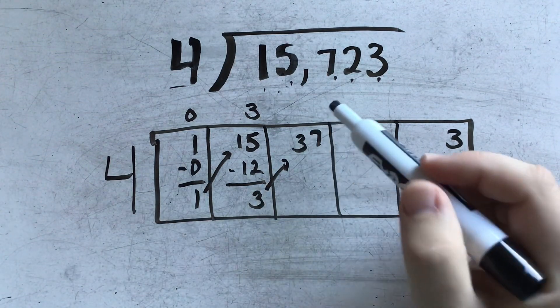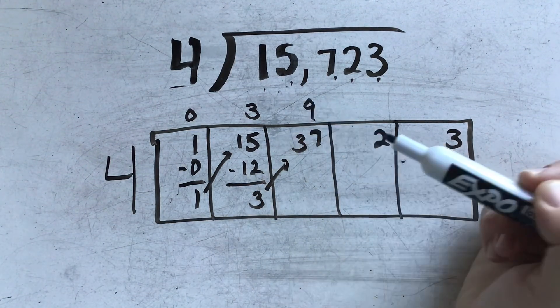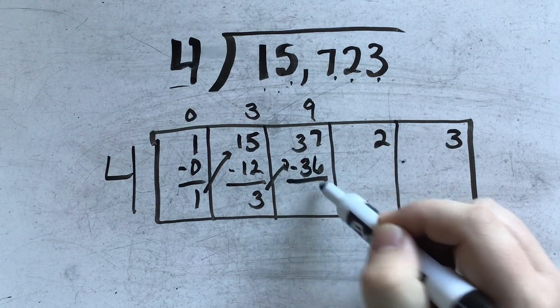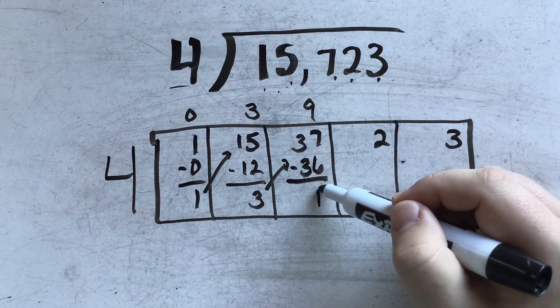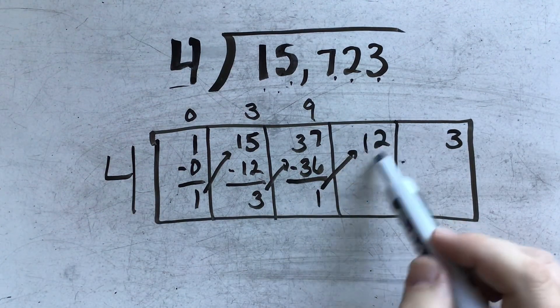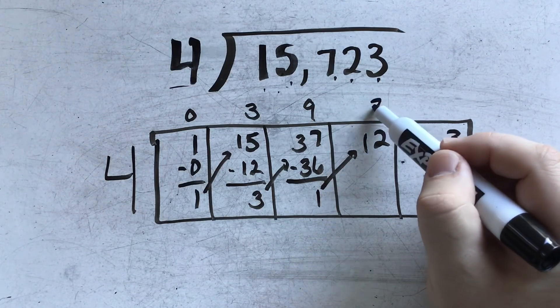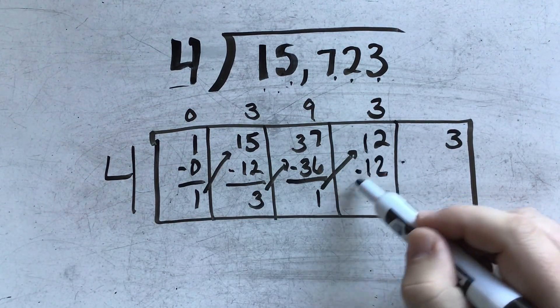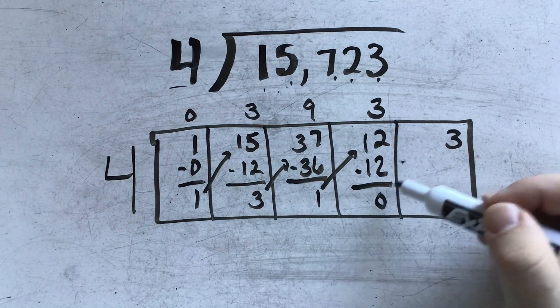Bring that next door. 4 goes into 37, 9 times. 9 times 4 is 36. And when I subtract, there's 1 left over. 4 goes into 12, 3 times again. 3 times 4 is 12. And when I subtract, there's nothing left over.